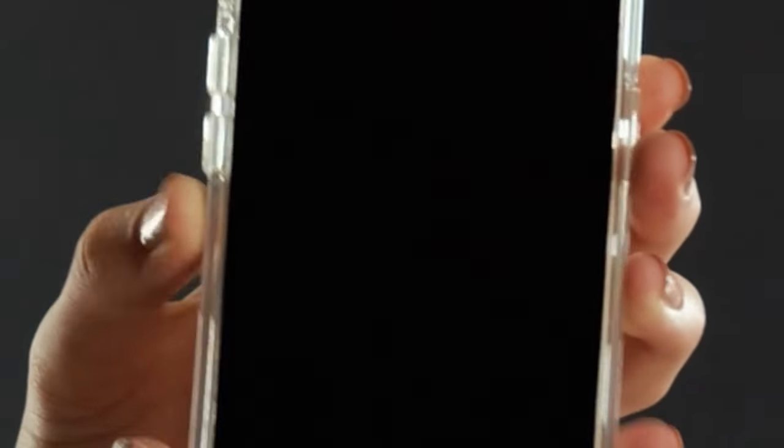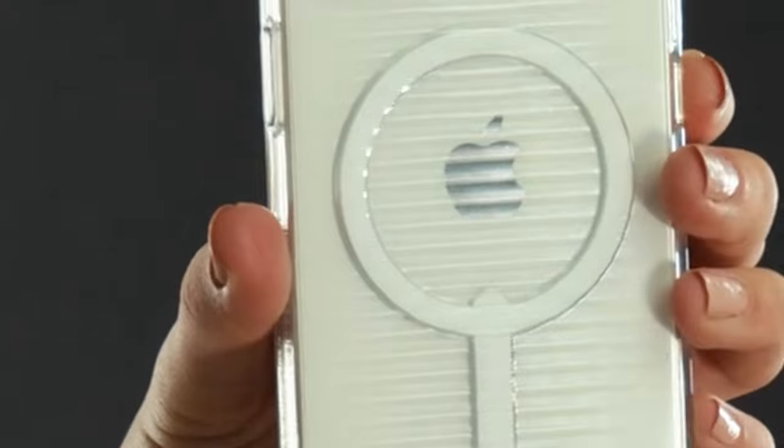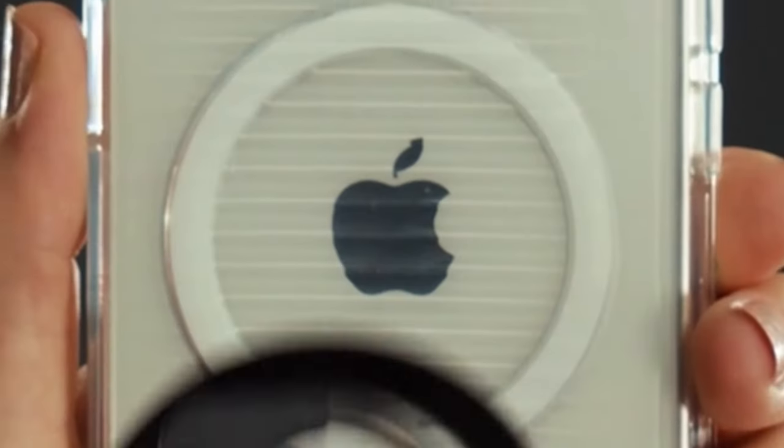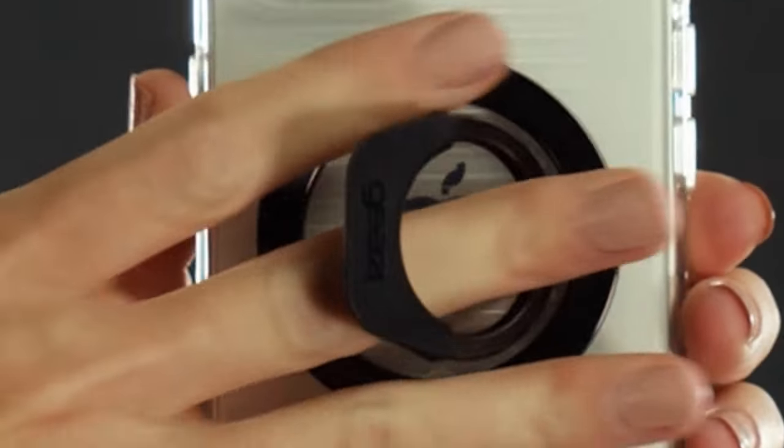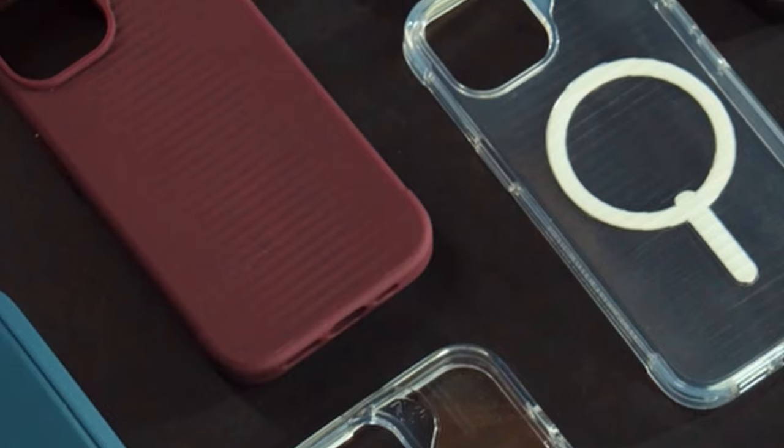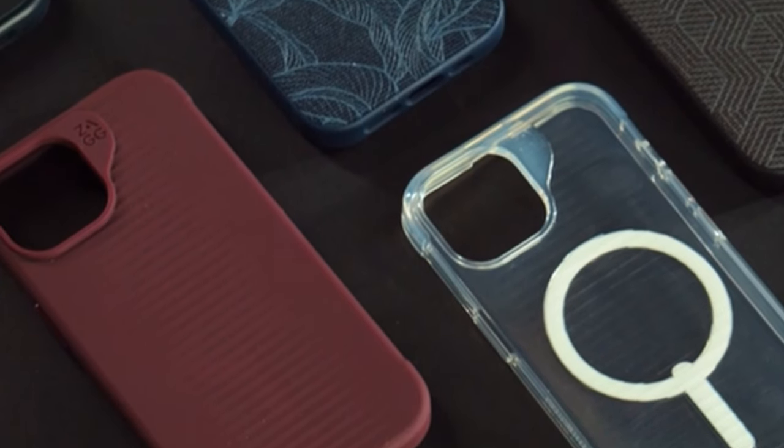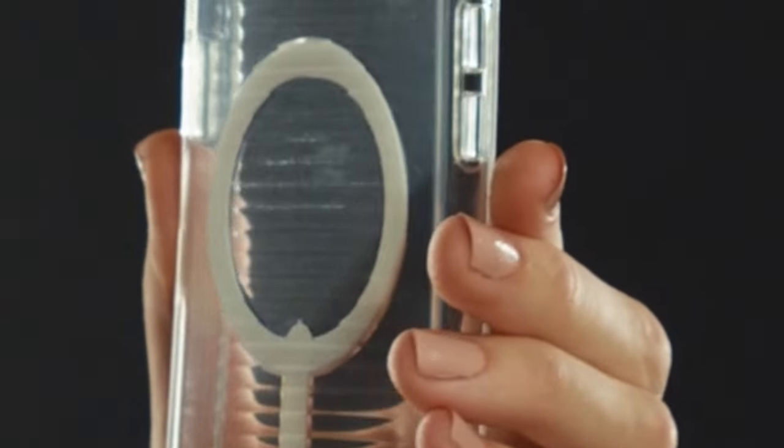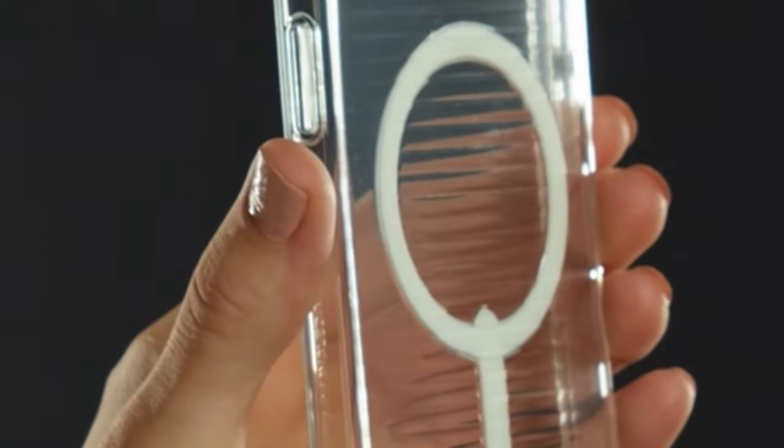Convenience and style are combined in this pocket-friendly case with a non-slip grip and slim design. The cover protects your device from all sides with its all-around strength and precise cutouts that make it simple to access all buttons and ports. The case also exudes sustainability since it is composed of up to 91% recycled post-consumer materials.